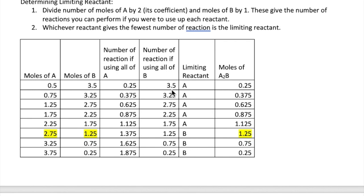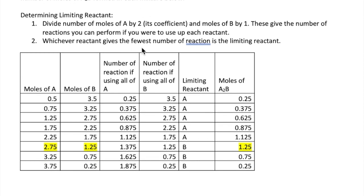Recall that we can find the limiting reactant using the following method described here. We take the number of moles of each reactant and then divide it by its coefficient, so A by 2 and B by 1. This gives us the number of reactions that we can carry out if we use up that specific reactant. Then, whichever reactant gives us the smallest number of reactions, that's our limiting reactant.